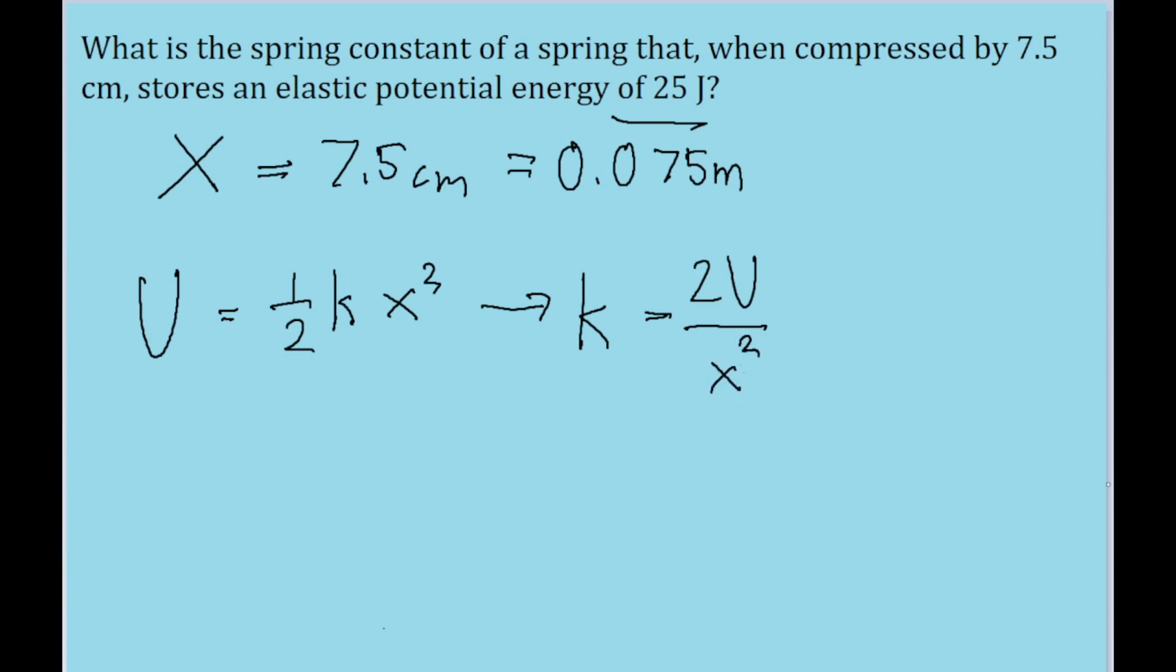So now all that's left for us to do is put into this equation the variables we were given in the problem. So U is 25 joules, and x is 0.075 meters, and it's being squared.